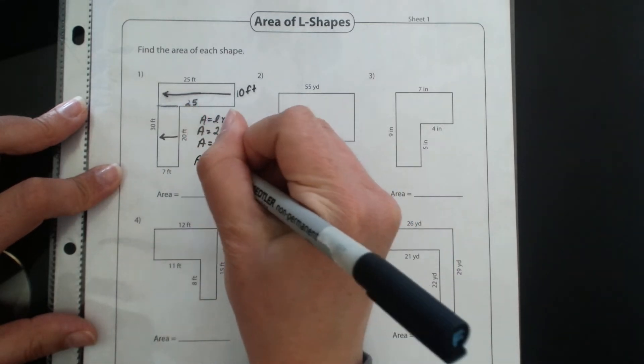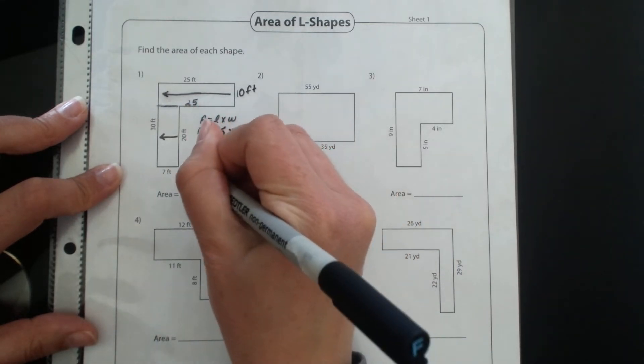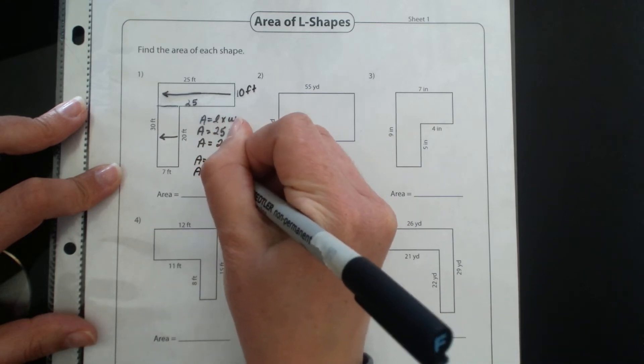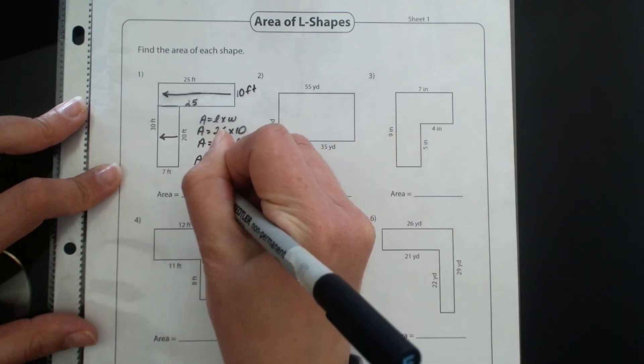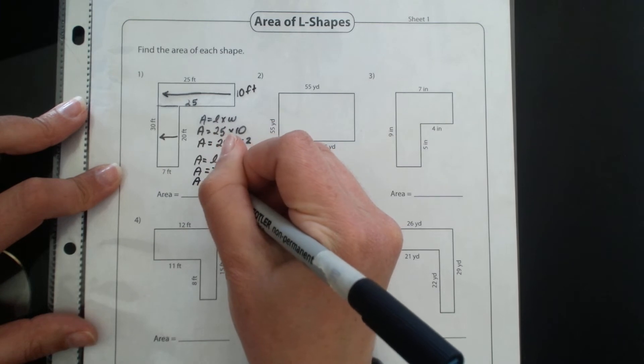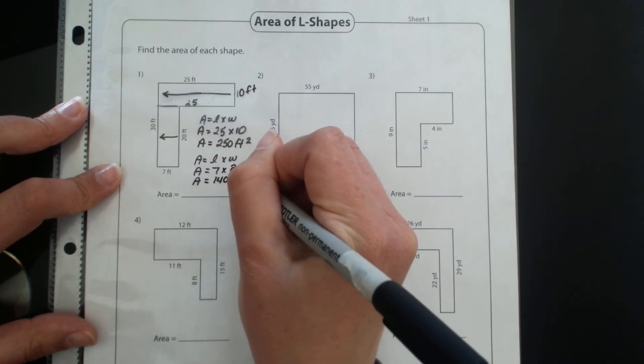So again, area equals length times width, area equals 7 multiplied by 20, and I find out that that one is 140 feet squared.